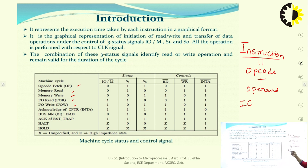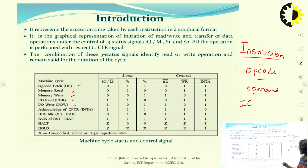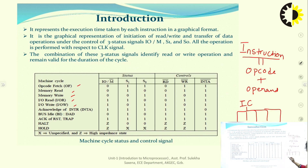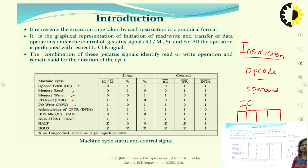The time required to complete one operation of microprocessor is called a machine cycle. There are basically five types of machine cycles: opcode fetch, memory read, memory write, IO read, and IO write. An instruction cycle consists of minimum one machine cycle and maximum five machine cycles in the case of 8085.